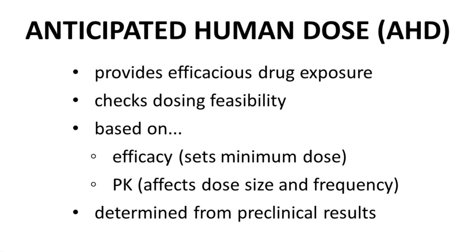As a lead series advances through drug discovery and generates a compound with adequate preliminary safety, efficacy, and PK properties, researchers will formally estimate an anticipated human dose, AHD. The anticipated human dose will be driven by the efficacy, the PD of the compound, and the PK of the compound. The anticipated human dose is the amount of drug expected to be necessary to provide efficacious exposure of the drug for a patient. It checks the feasibility of a drug dosage with regard to potency and efficacy, and to ensure alignment with physicochemical properties like solubility.